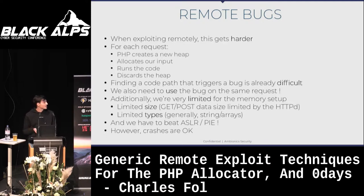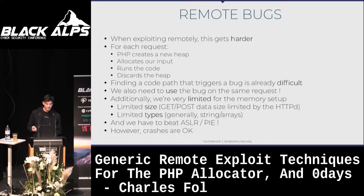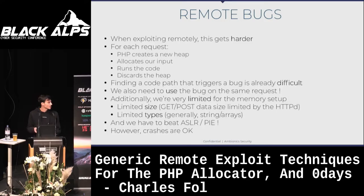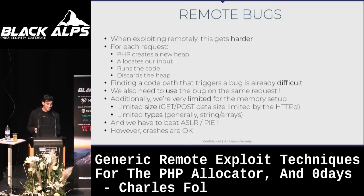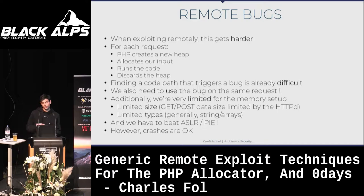We also have to beat ASLR and PIE remotely. One thing going for us is that crashes are pretty much okay — there's always going to be a main process running as root. Whenever you crash a worker, it gets respawned automatically. Also, every worker has the same ASLR and PIE randomization. So if you can leak the ASLR in one worker, you're going to have the same ASLR in the other worker.